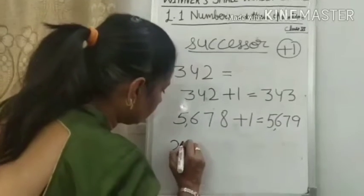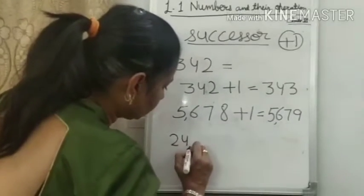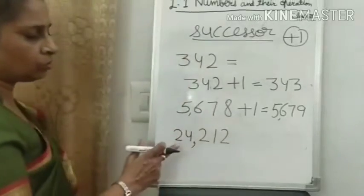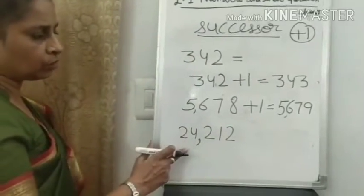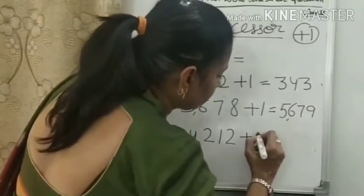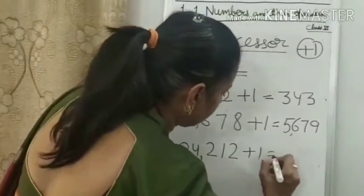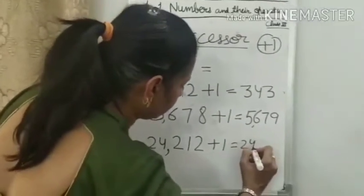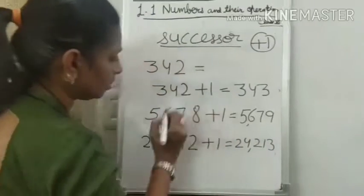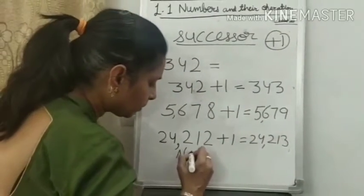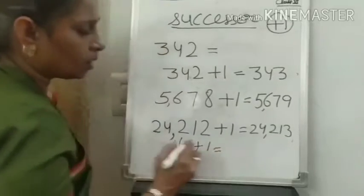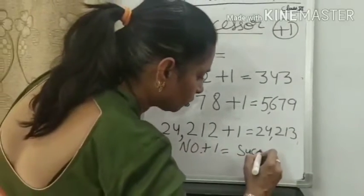Another example: the number is 24,212. Now, 24,212 plus 1. The answer is 24,213. Number plus 1 gives the answer, which is the successor.